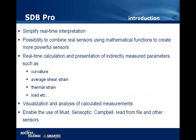SDB Pro is designed to simplify real-time interpretation. There is the possibility to combine real sensors using complex mathematical functions to create a more powerful virtual sensor. These sensors are calculated in real time and the results are treated as normal sensors. Using this, it is possible to calculate, for example, the curvature, the average shear strain, thermal strain, the load, and so on. There is also the possibility for visualization and analysis of calculated measurements, and it is possible to enable the use of MAST reading unit, SensOptic, Campbell, and read-from-file sensors. These sensors can only be measured when the SDB Pro license is active.